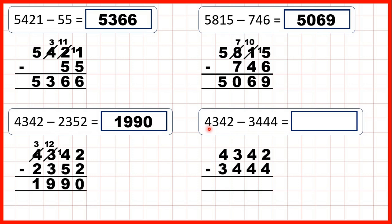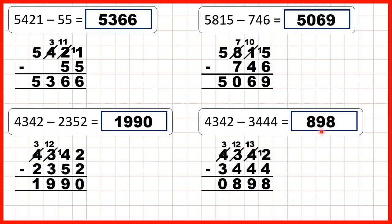Finally, let's work out 4,342 minus 3,444. We can't do 2 minus 4, so go to the left, 1 less, 1 in front — 12 minus 4 is 8. We can't do 3 minus 4, so go to the left, 1 less, 1 in front — 13 minus 4 is 9. We can't do 2 minus 4, so go to the left, 1 less, 1 in front — 12 minus 4 is 8. And then 3 minus 3 is 0. So we don't need to write zeros at the start of whole numbers, so we write our answer 898.